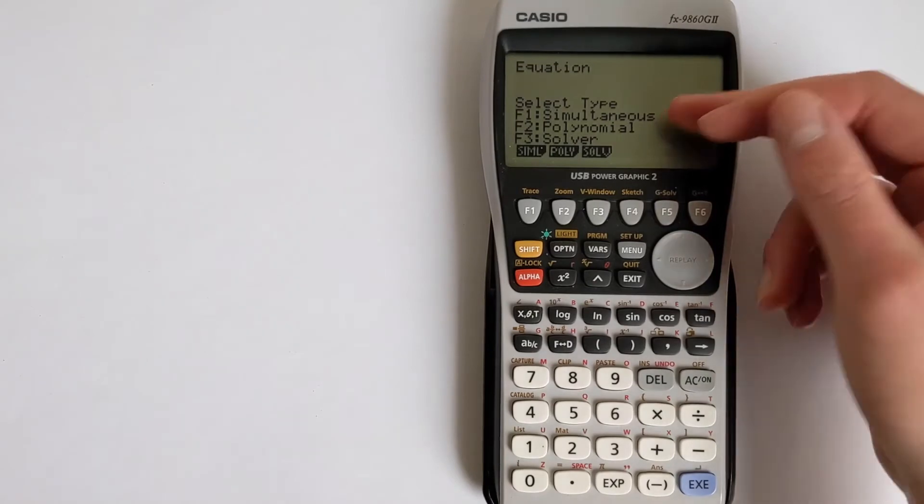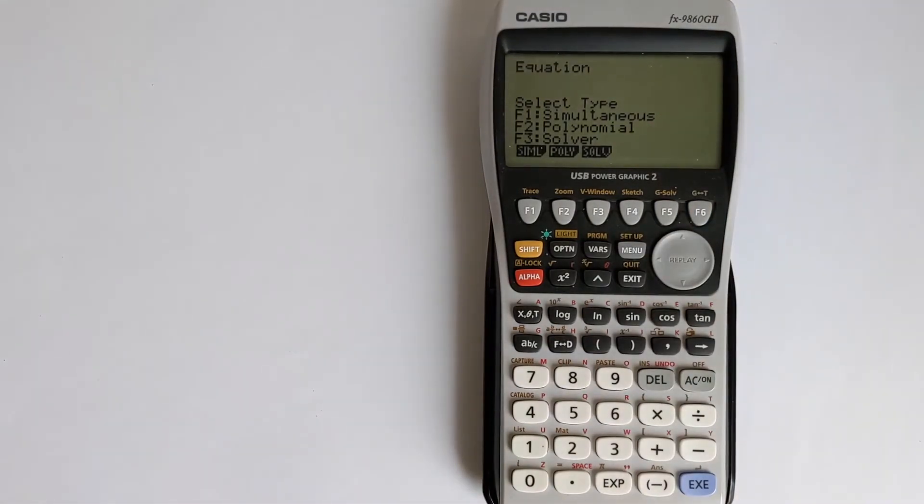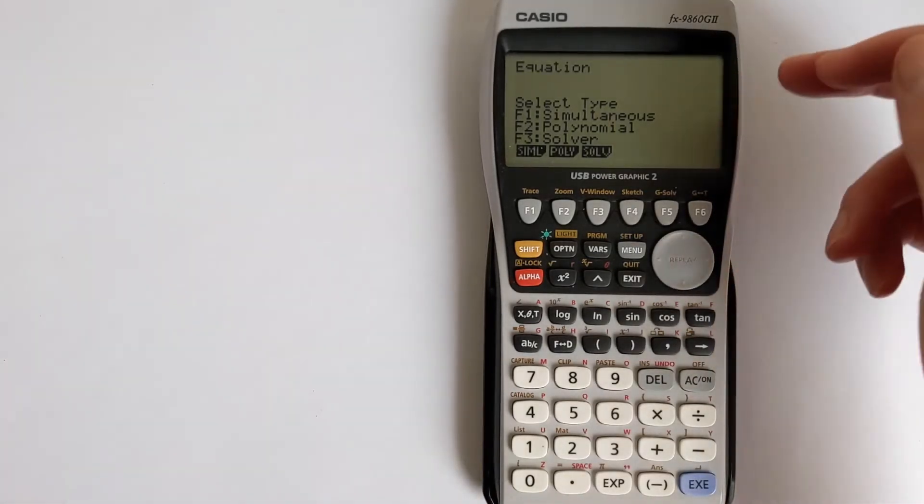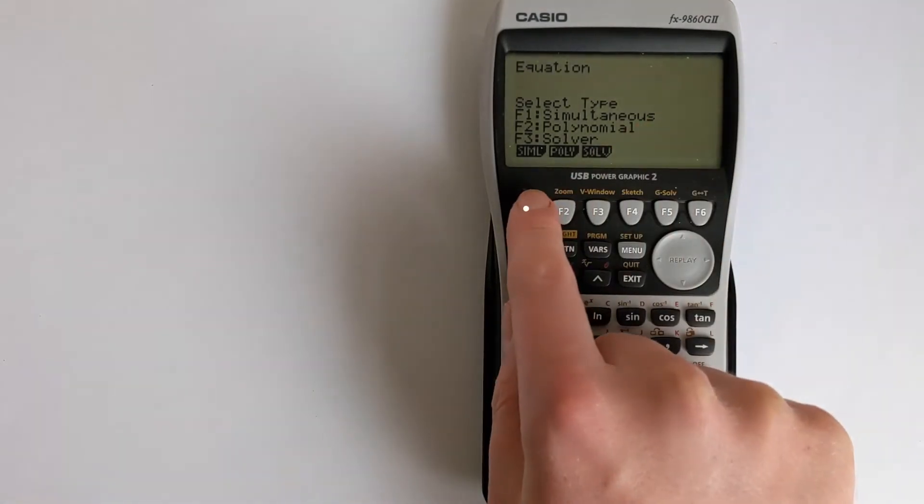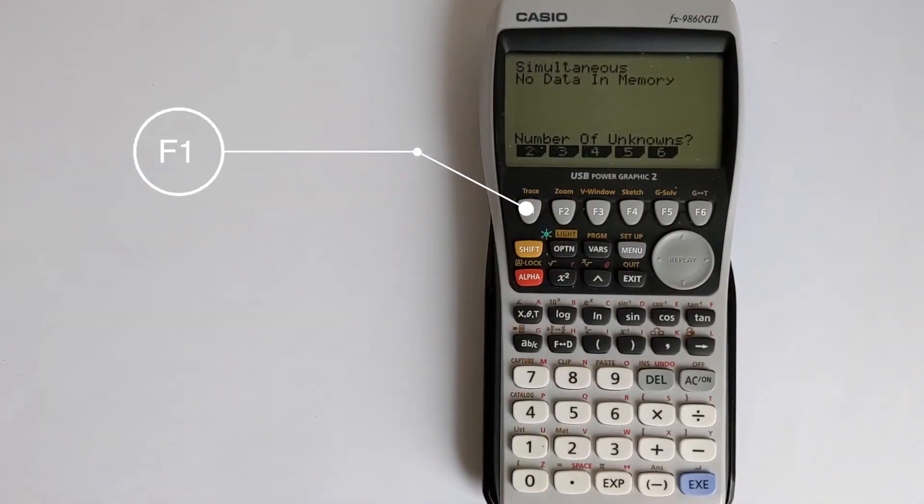So we want simultaneous. It's also got a polynomial solver for solving things like quadratic and cubic equations, and a solver function for other sorts of equations. We want to select F1 and this will bring us into simultaneous equations.